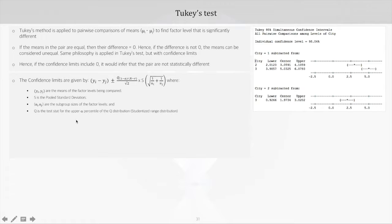There's a new term here, q, which is the test statistic for the upper alpha percentile of the q distribution, also called studentized range distribution. It is formed by the studentized range given by w by s, where w is the range (maximum minus minimum) of r independent observations drawn from a normal distribution. This normal distribution has mean mu and variance sigma squared. S is the standard deviation of a sample estimate with degrees of freedom nu.